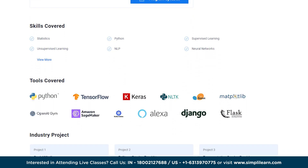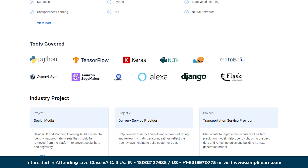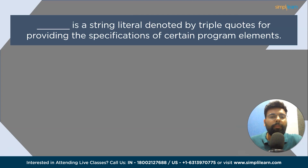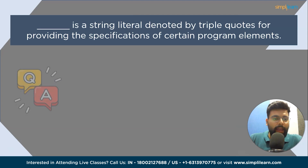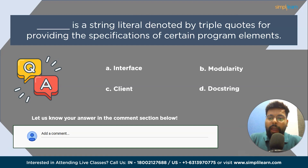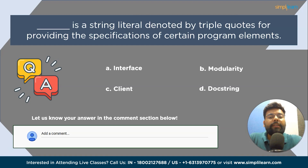Now I have a quiz question for you guys. A string literal denoted by triple quotes for providing the specifications of certain program elements — what is it? Your options are: interface, modularity, client, or docstring. Please answer in the comment section below, and we'll update the correct answer in the pinned comment.